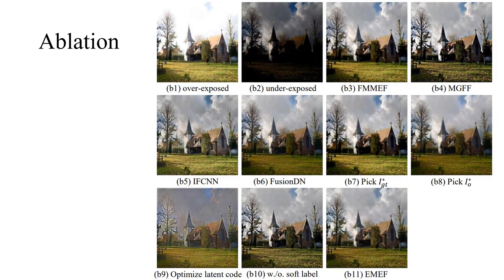In sample B, MGFF fails to brighten the dark region in the grass, FMMEF and IFCNN exhibit a little overexposure in the grass, and Fusion DN generates an image of low contrast and poor luminance. In both samples, our method can reconstruct the scene with moderate lighting conditions.